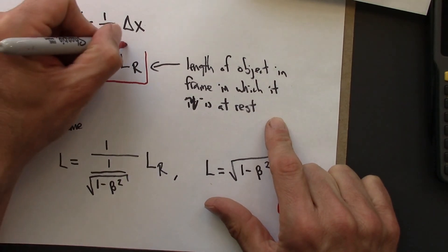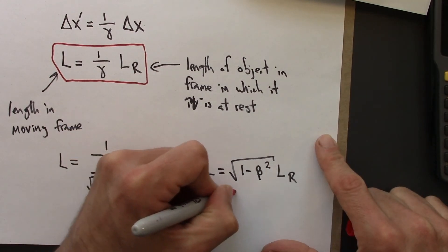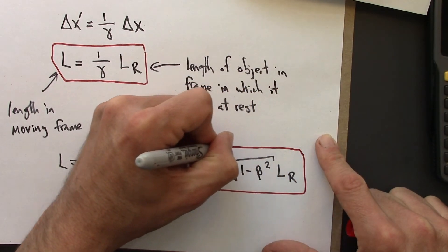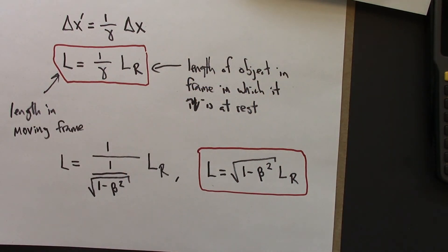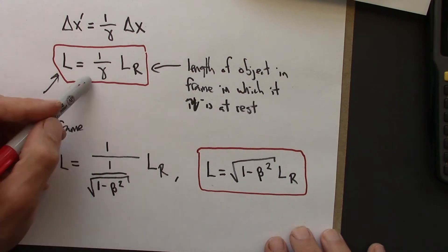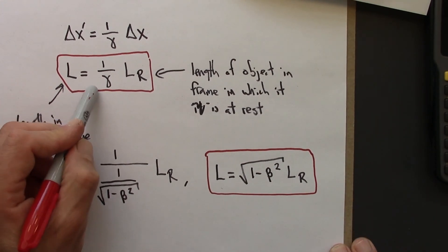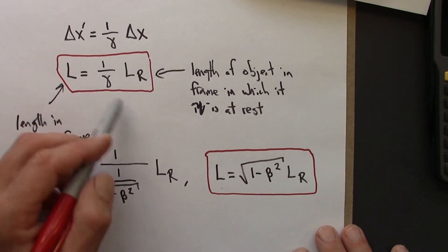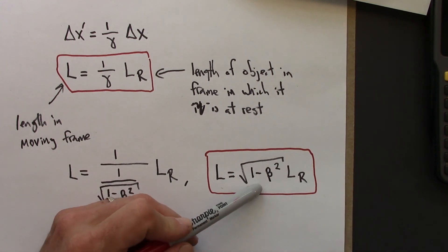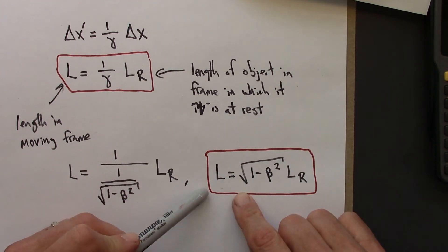The amount by which the length of an object in a moving frame. And if you've already got gamma calculated for a problem, might as well use this one. If you don't have gamma calculated, you can save yourself a tiny bit of punching on a calculator by using this form. So these are the formulas for Lorentz contraction. And following this video, there's a quiz where you can practice using these formulas.